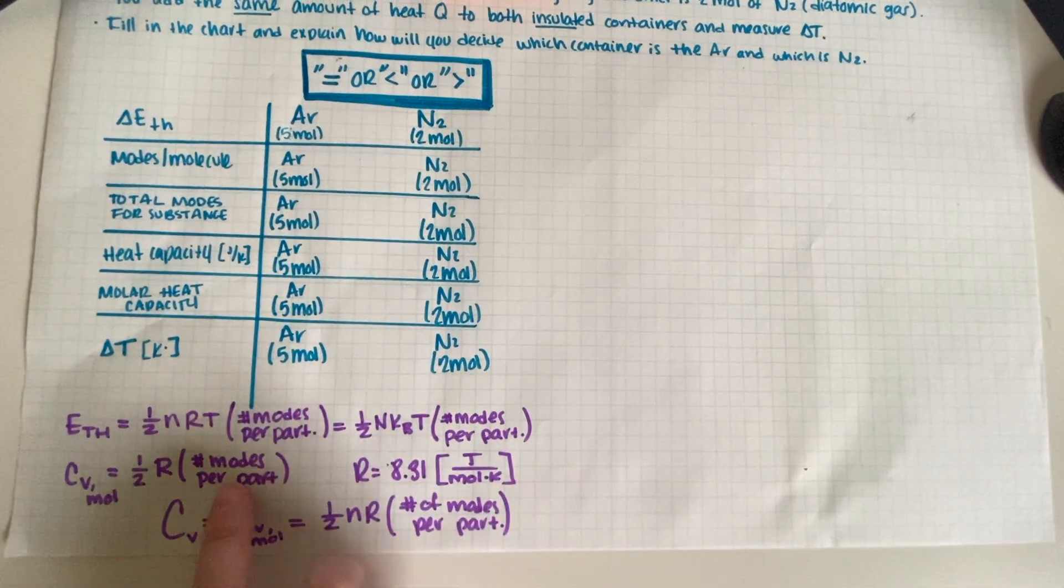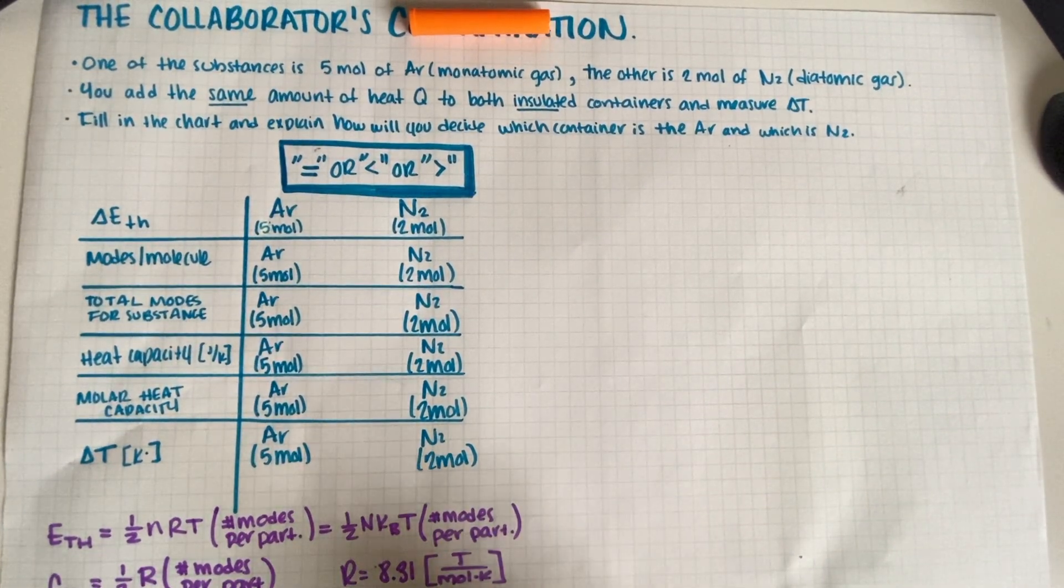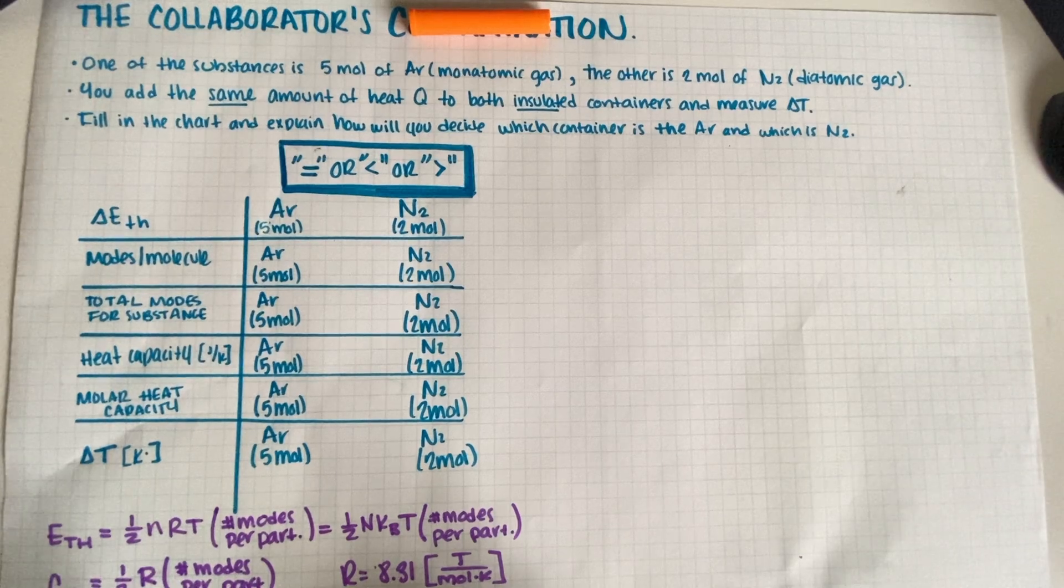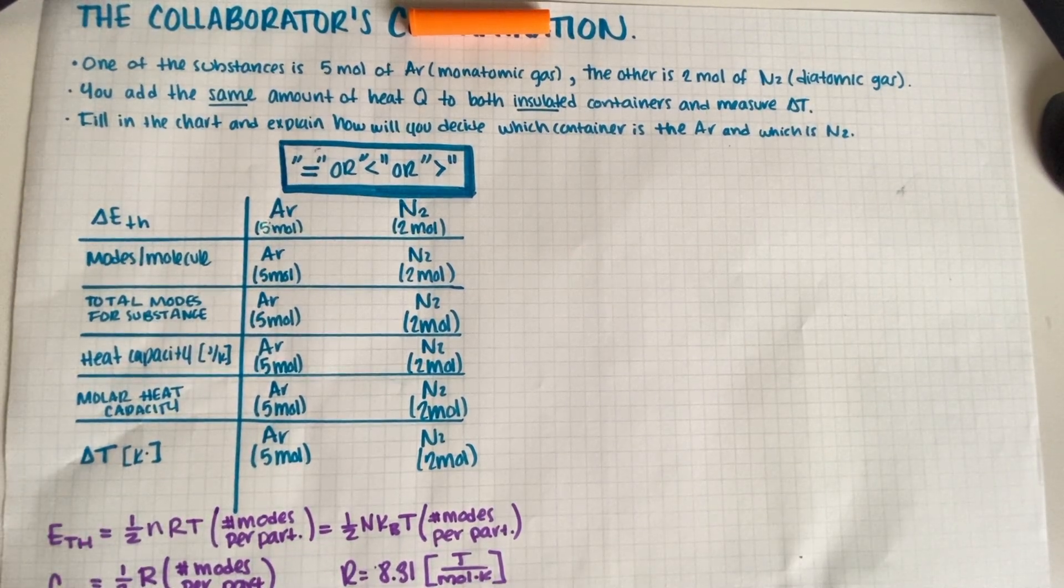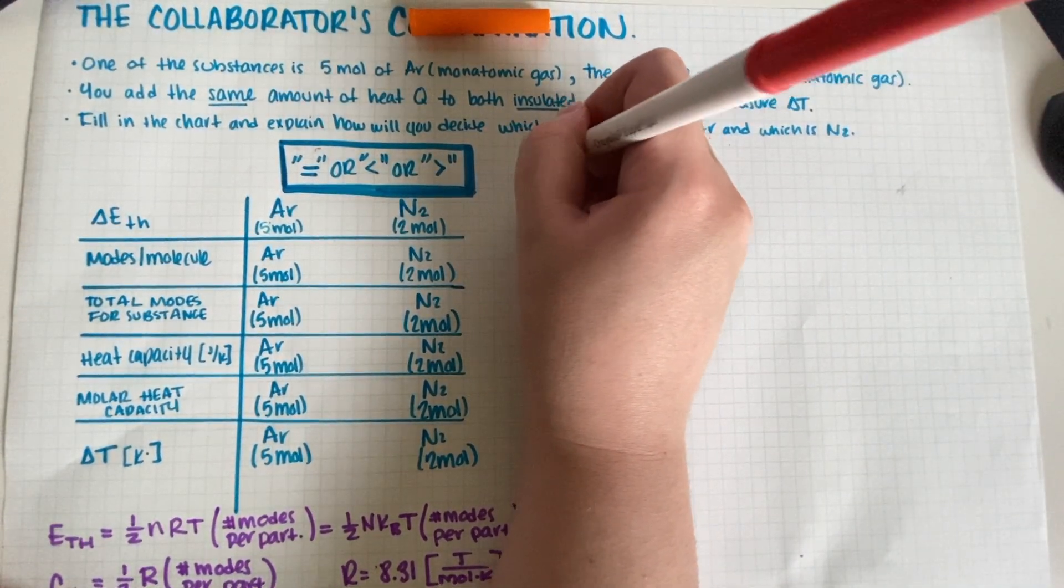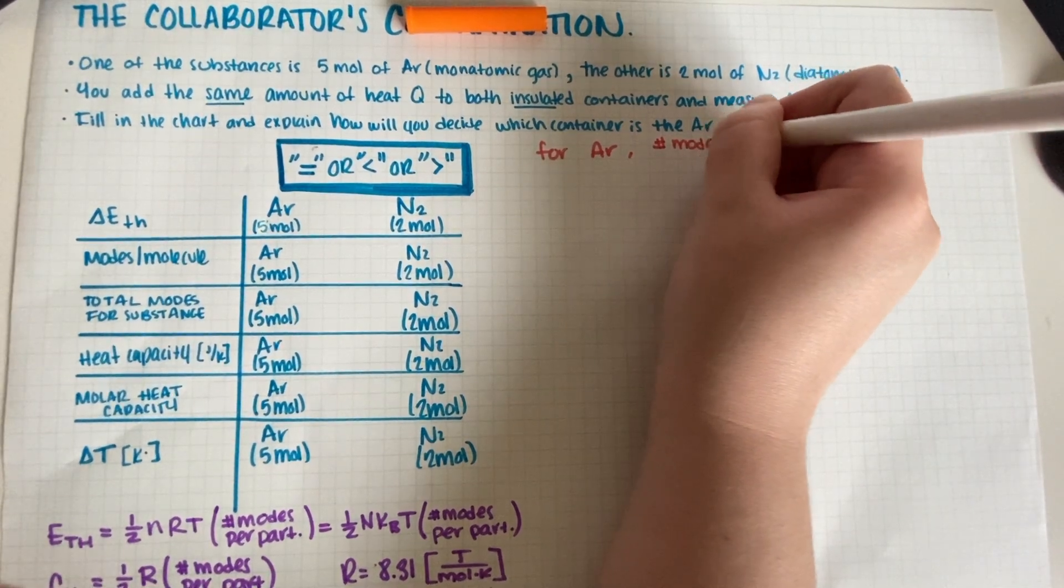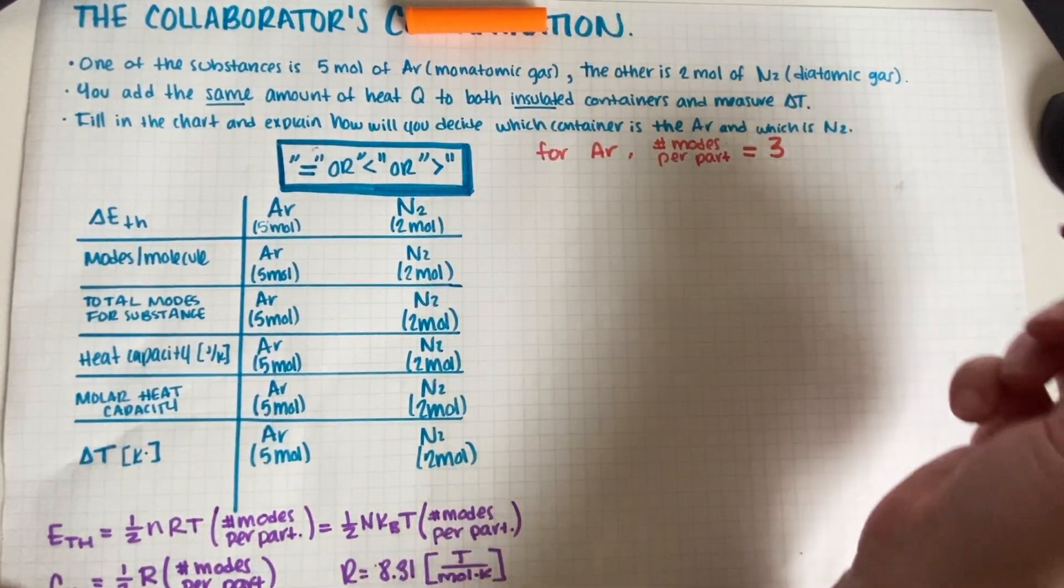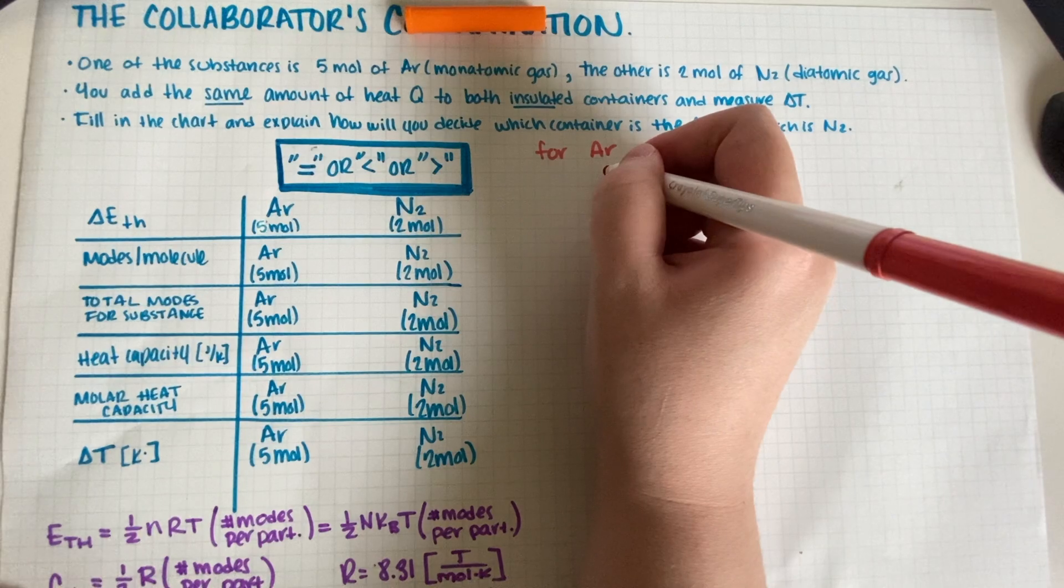I think that the most important part is that you know how to count your modes. I just made a video on how to count them, so if you are still not very good at that, feel free to go look it up. So your monatomic gas, the argon, your number of modes per particle is equal to three because this is a monatomic gas.